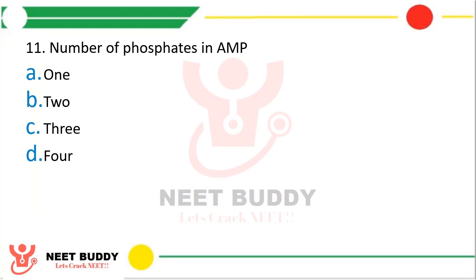Question 11: The number of phosphates in AMP is — one, two, three, or four? The correct answer is option A — one. AMP stands for adenosine monophosphate, so there is one phosphate group.